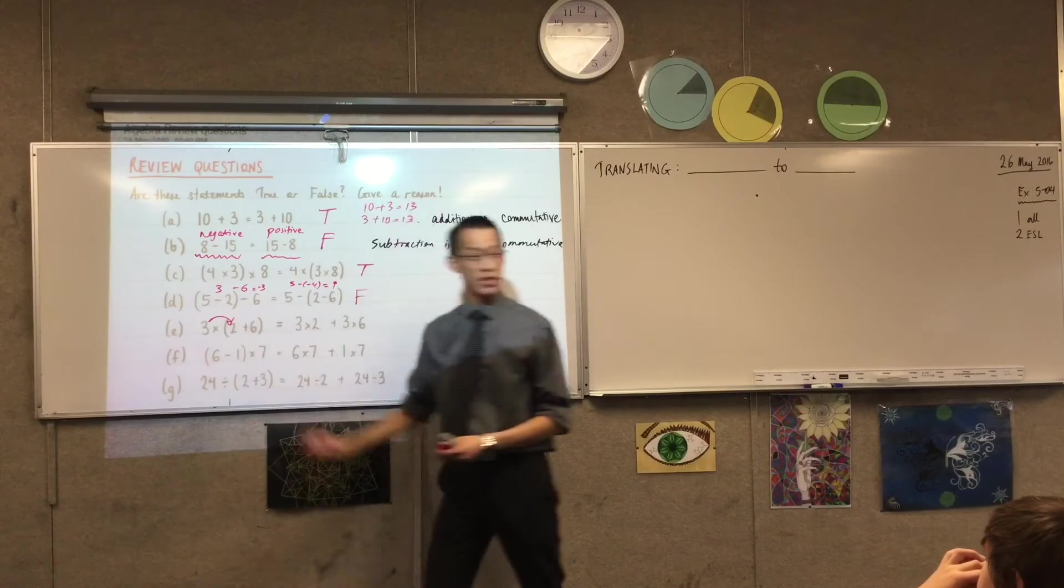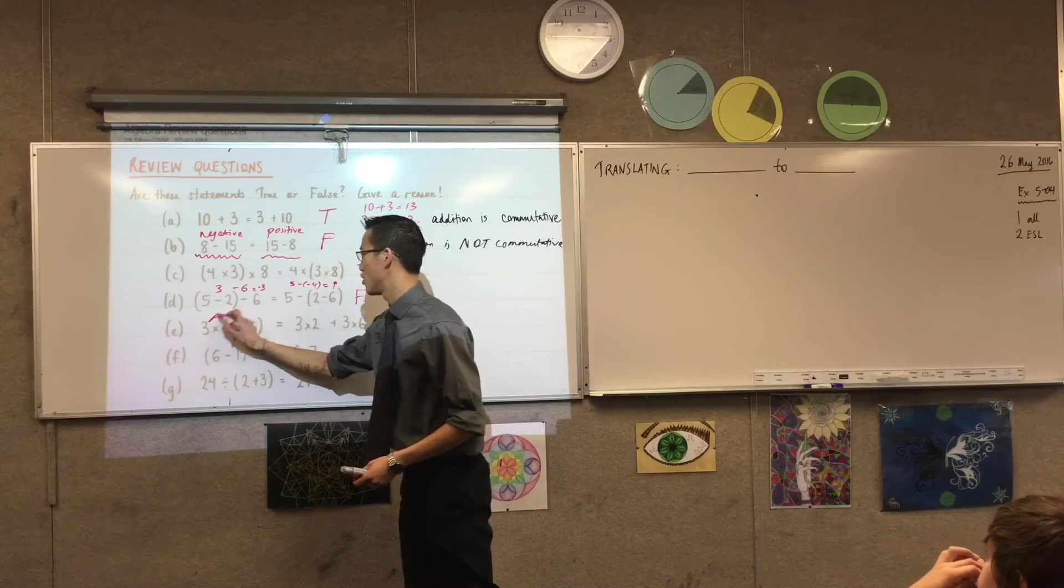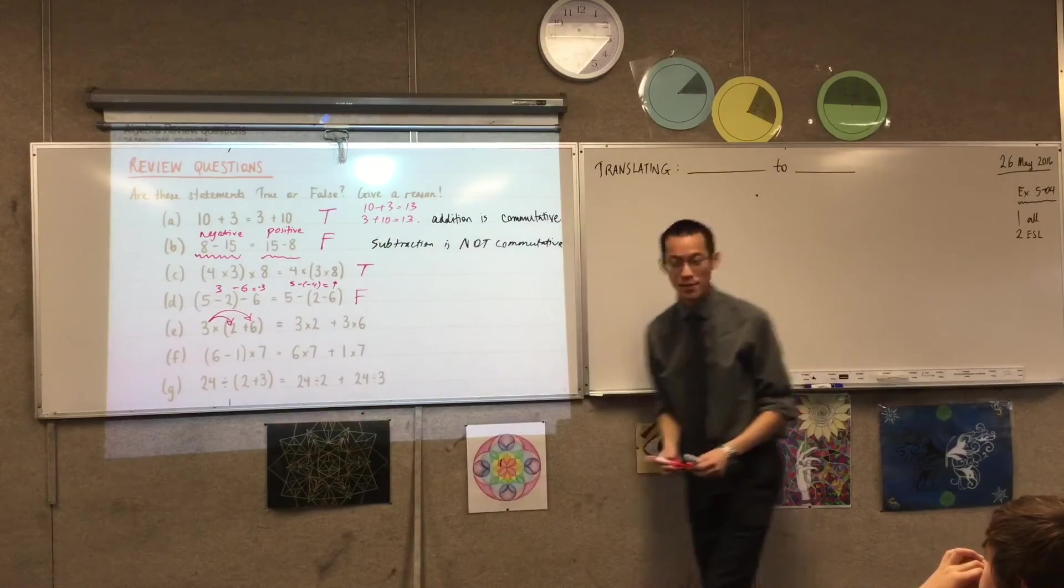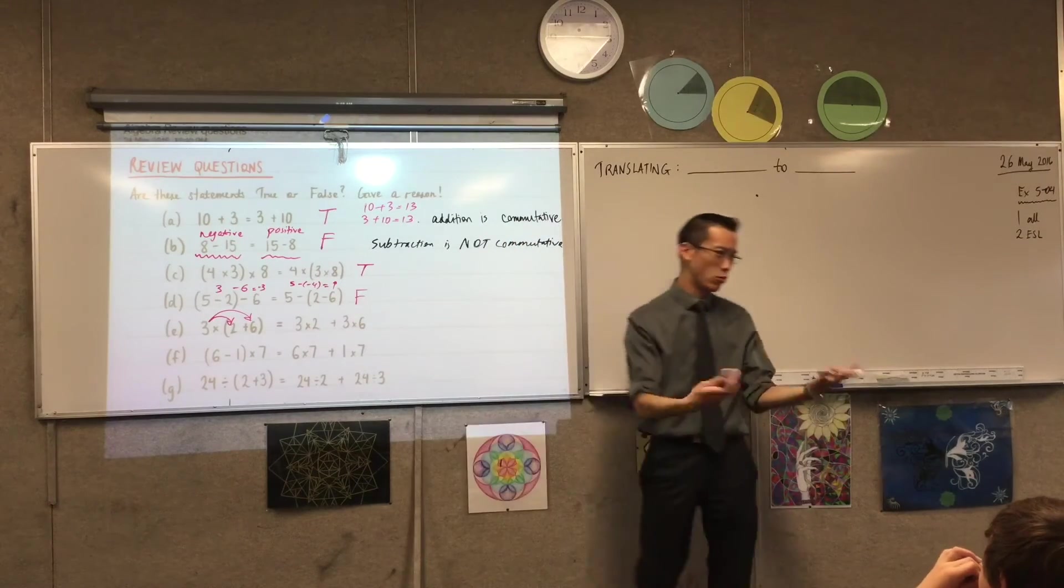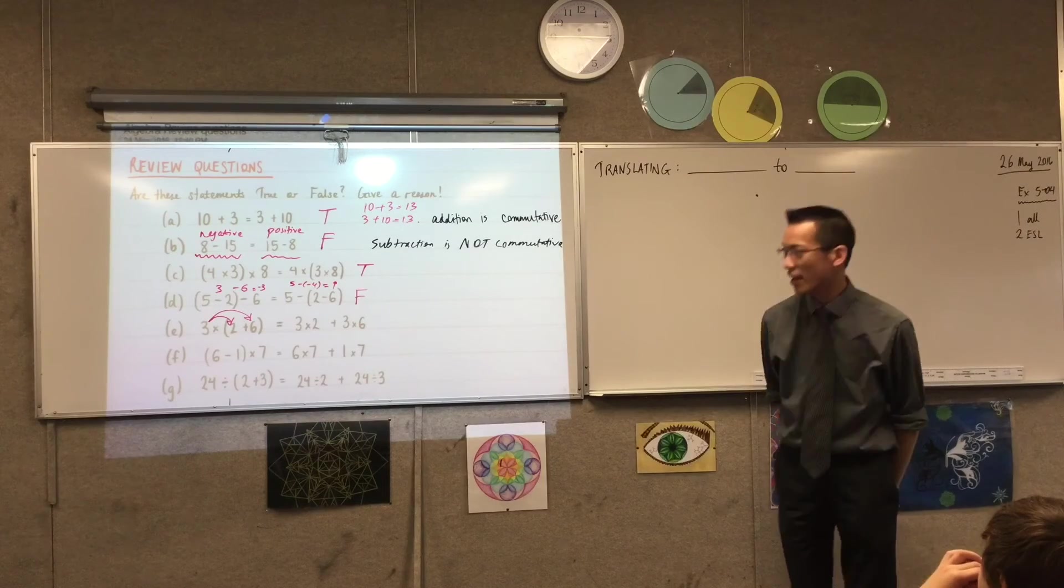So he goes distributed to the two. And then he gets distributed to the six. Okay? So that's why you get three lots of two, three lots of six, and whatever that happens to be. Okay? That's true.